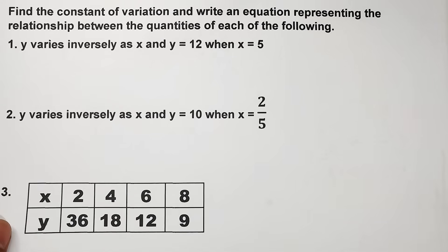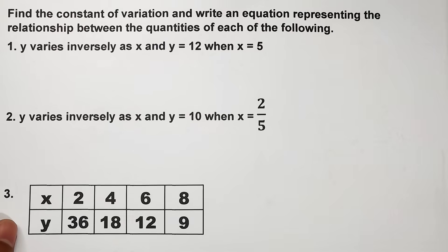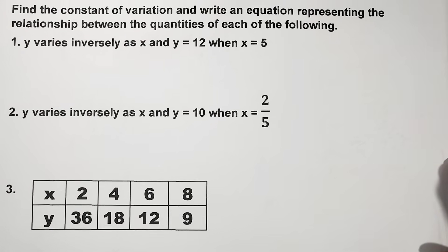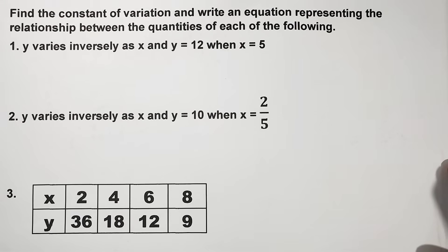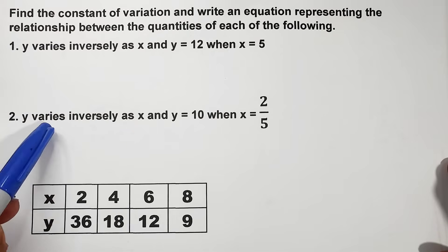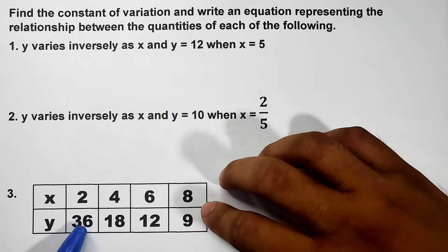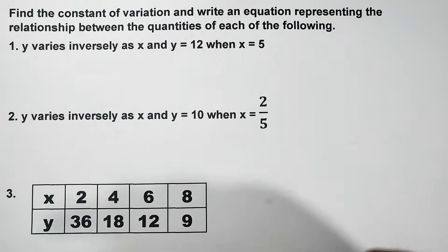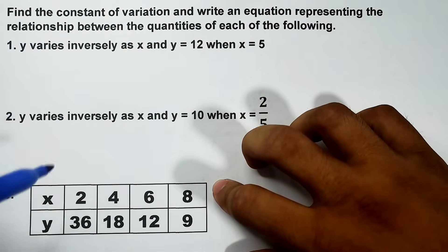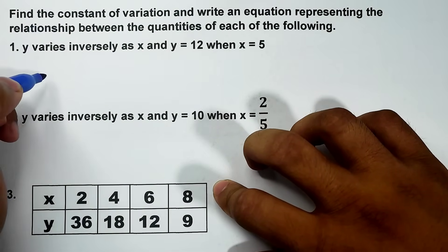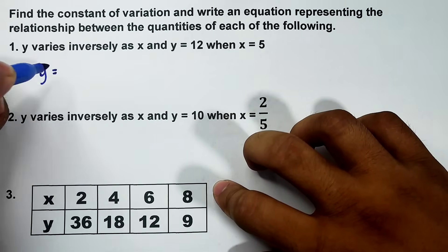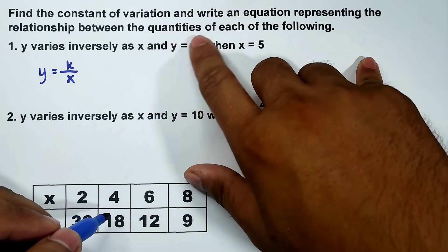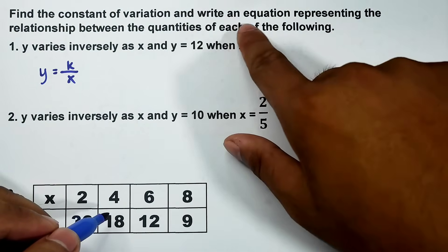In the next part, I will teach you to find the constant of variation and write an equation representing the relationship between the quantities of each of the following. For my three examples, I have here two statements and one table.